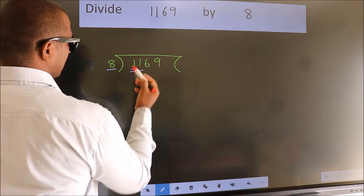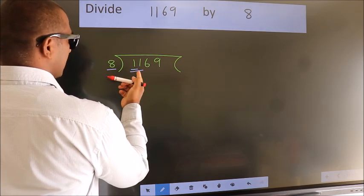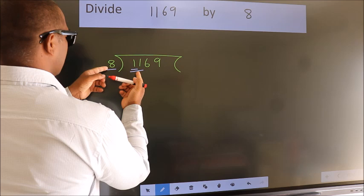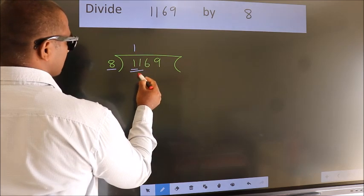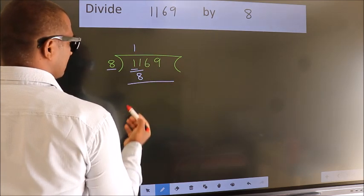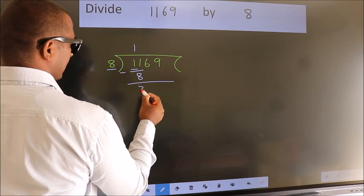A number close to 11 in the 8 table is 8 once 8. Now we subtract and get 3.